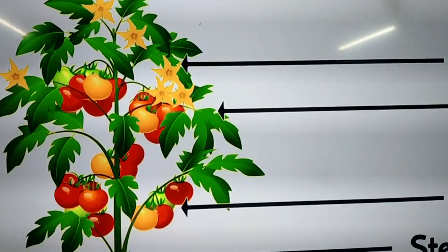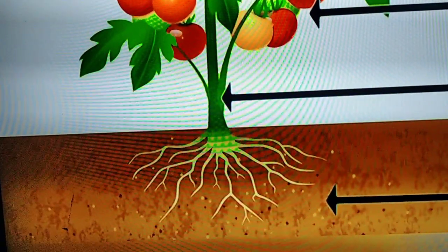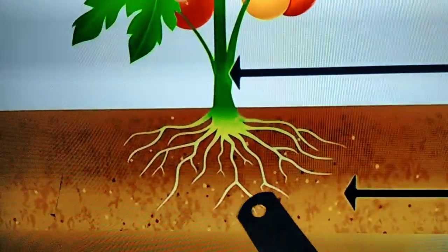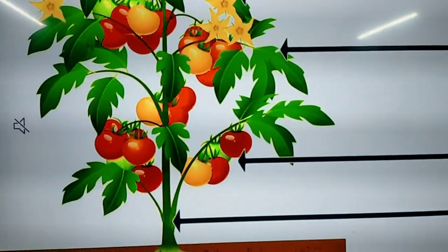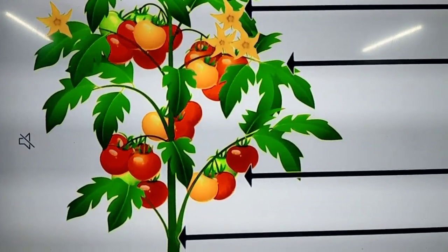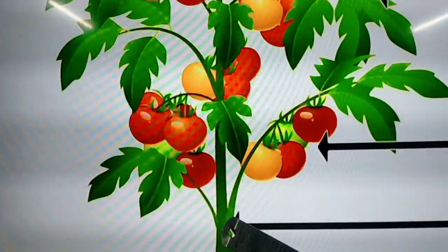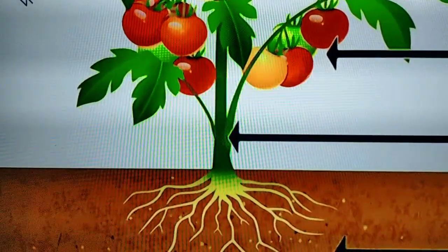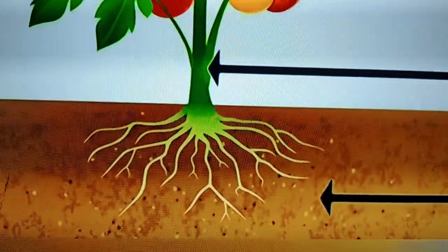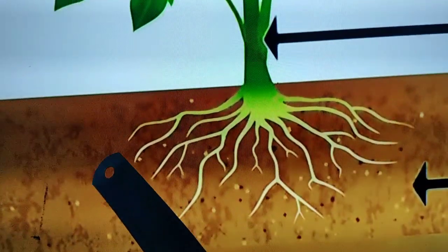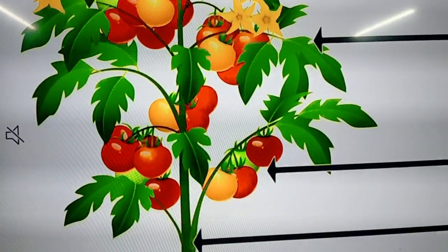Each part has got a different function to carry out, which is very important. Now let us see the root system first. The roots help to hold the plant firmly in the ground. Like we stand on the ground with the help of our legs — without legs we cannot stand — in the same way, if the roots are not holding the plant firmly in the ground, the stem alone cannot stand without a firm foundation. So the roots help the plant to stand firmly in the soil. The next function is that these roots absorb water and minerals from the soil and then supply it to the rest of the parts.